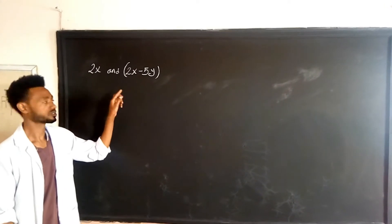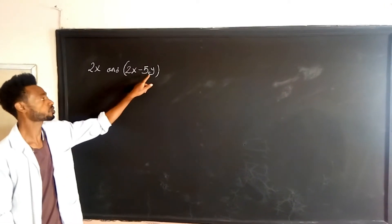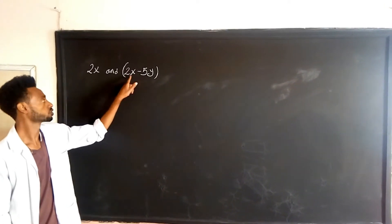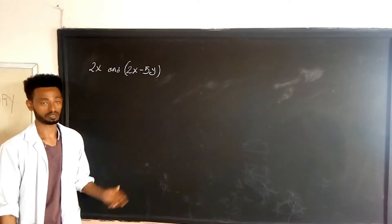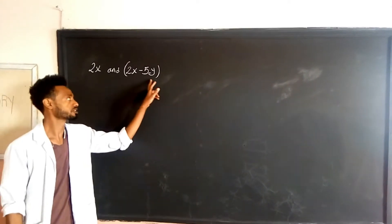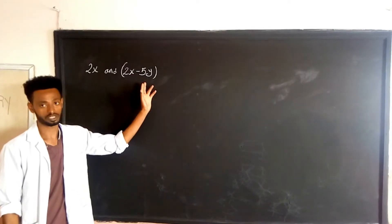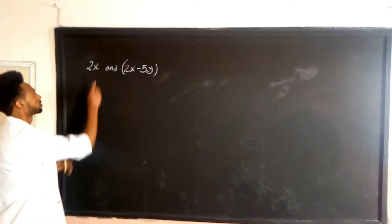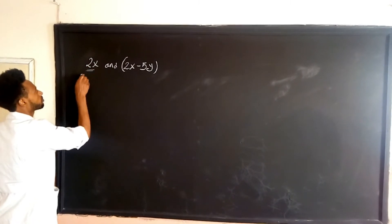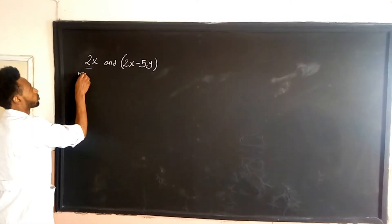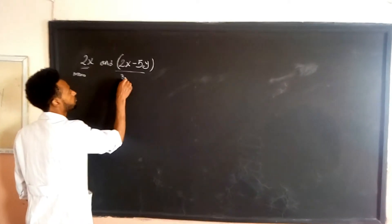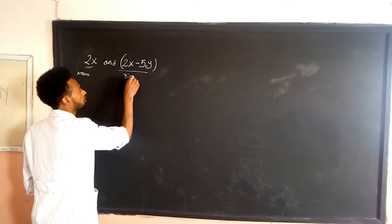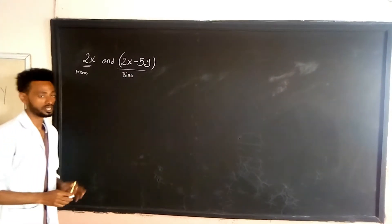This is a binomial — 2x and negative 5y. This means binomial. A binomial has two terms.